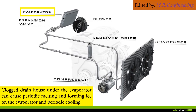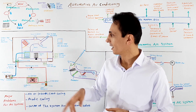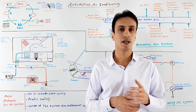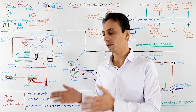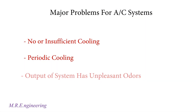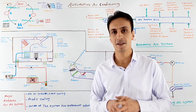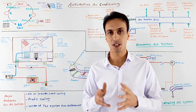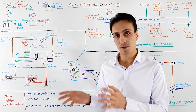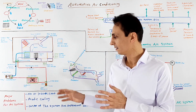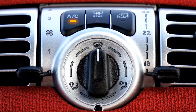Periodic melting and re-forming of ice causes periodic cooling. Because the evaporator is cold, condensation of moisture on it forms water droplets that need to be drained. There is a drain hose under the evaporator chamber — if it gets clogged, it causes excessive frosting on the evaporator, and the long periodic melting and re-forming of frost causes periodic low and high airflow from the blower. Another problem with AC systems is that the system output has unpleasant odors, which can be caused by fungi and bacteria living on the evaporator, or because the cabin air filter needs to be changed. Semi-automatic and fully automatic systems can also record trouble codes, so if the AC light on your panel is flashing, visit a service shop to read the codes and do the related repairs.